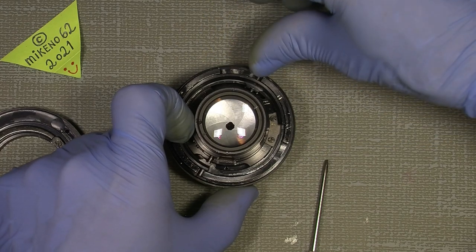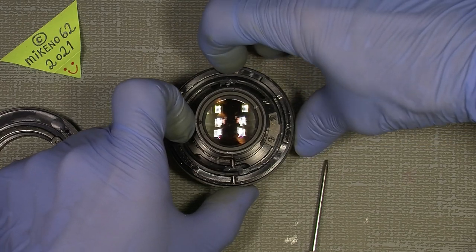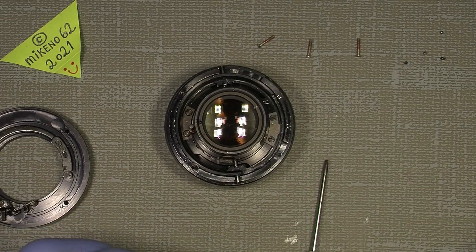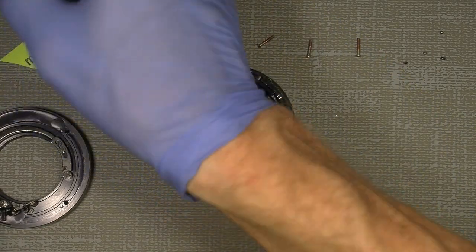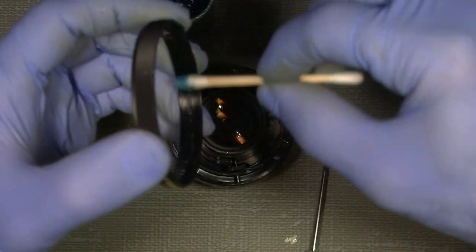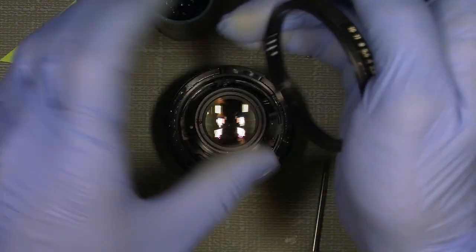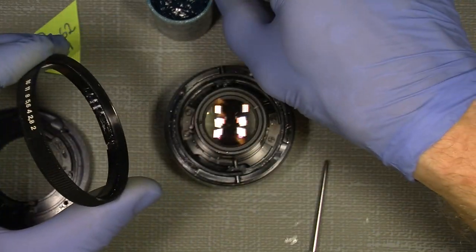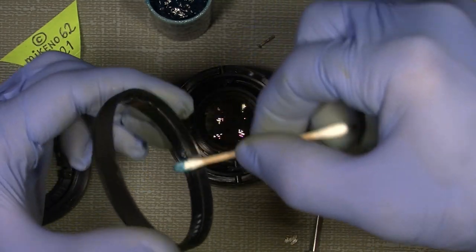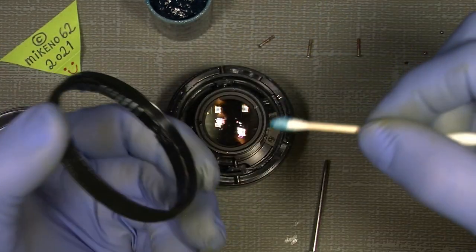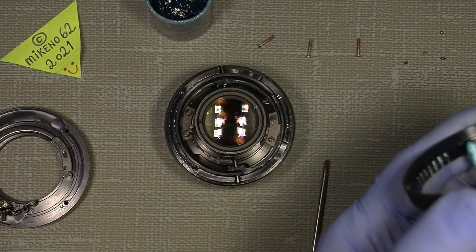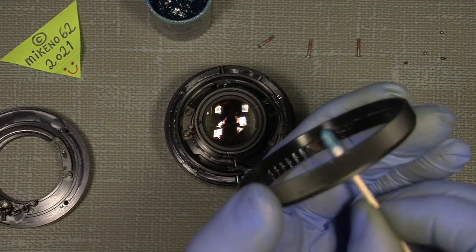Then the same thing for the aperture ring - just a little amount we can add in here to make it more soft to actually move. There, we can also give the two notches here some grease.